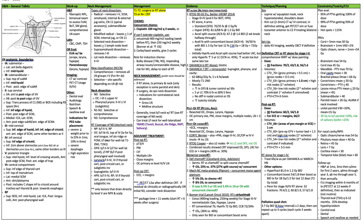Level 2 is your superior cervical nodes, broken up into level 2a and level 2b. Level 2a is anterior to the posterior edge of the internal jugular vein; 2b is posterior to the posterior edge of the internal jugular vein.